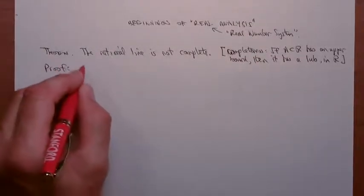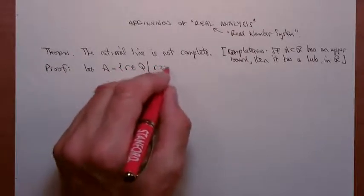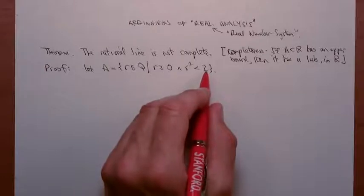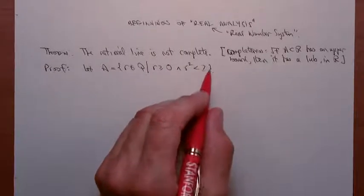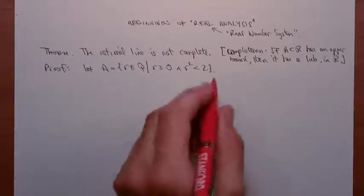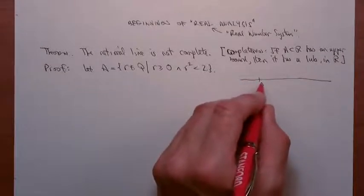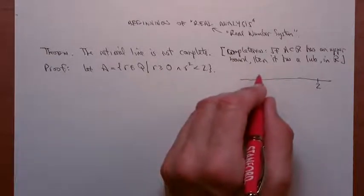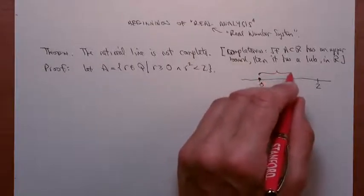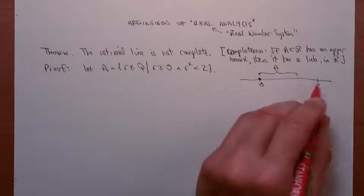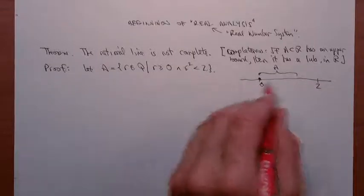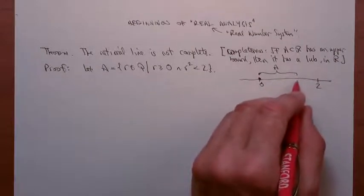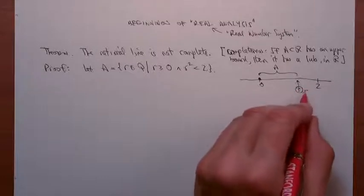Here's the proof of the theorem. Let A be the set of all rationals r such that r is non-negative and r squared is less than 2. You can probably sense what's going on — this is going to hinge around the property that the square root of 2 is irrational. Let me draw a picture. Here's 0, here's 2. A is going to be a set where everything is greater than or equal to 0 and goes up to some point less than 2, and we know that lurking in there somewhere is the square root of 2.